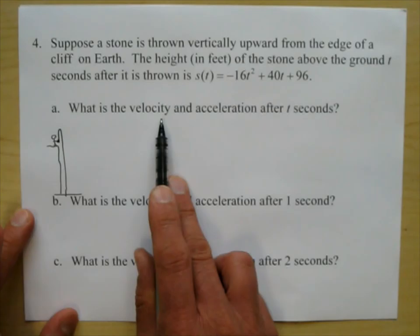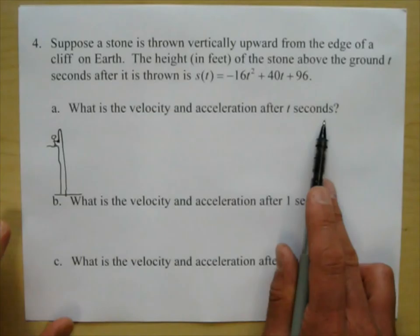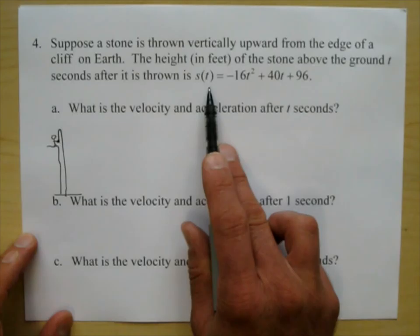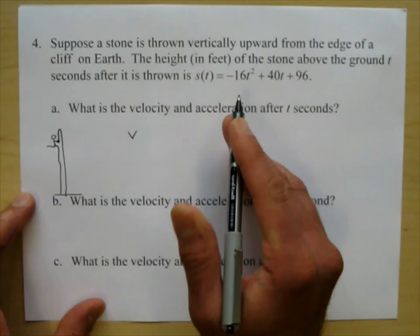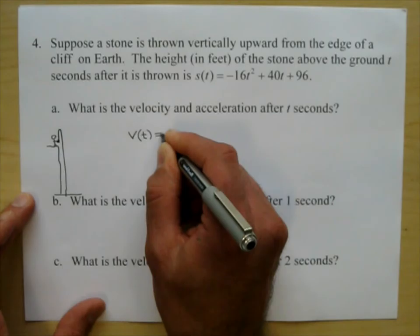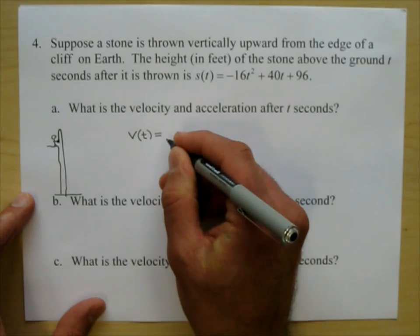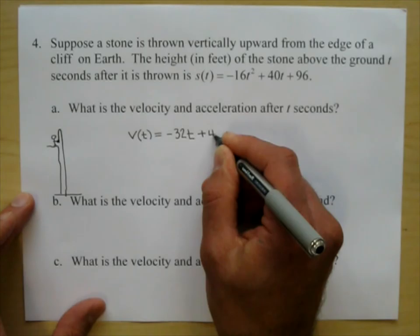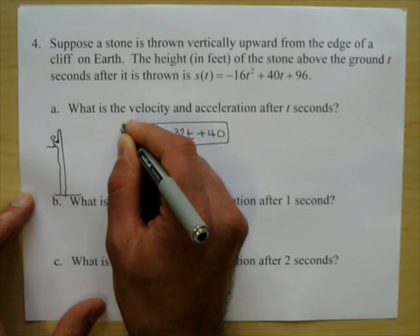Part a: what is the velocity and the acceleration after t seconds? They want the velocity function and the acceleration function. To find the velocity function you take the derivative. So v of t equals negative 32t plus 40, applying the power rule. There's the velocity function.